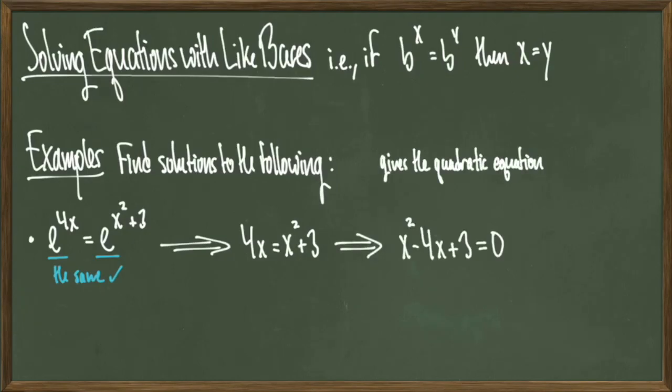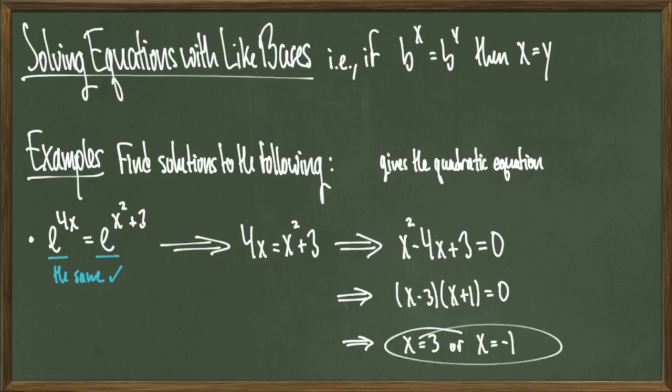Simplifying this further, we find that this is actually a quadratic equation. When we factor and solve, we find a solution set of x equaling positive 3 and x equaling negative 1, and we're done.